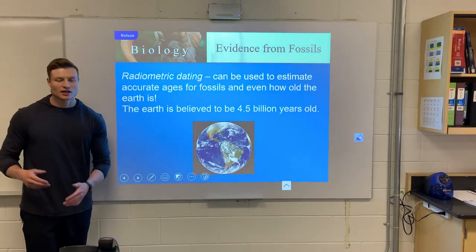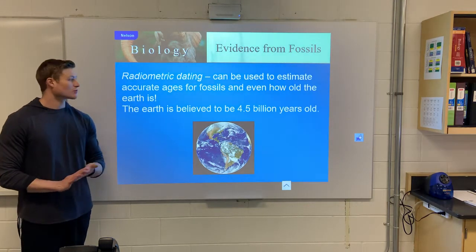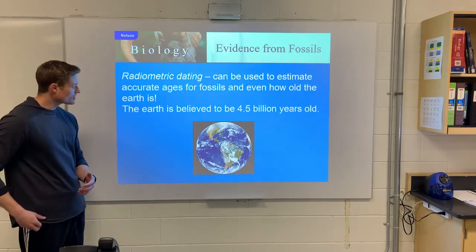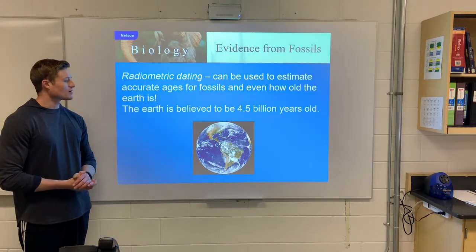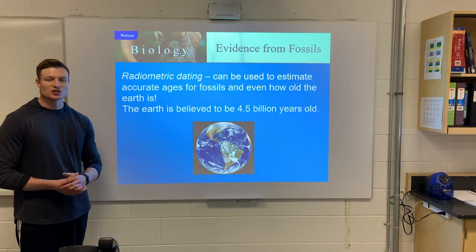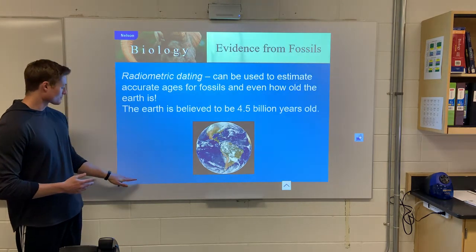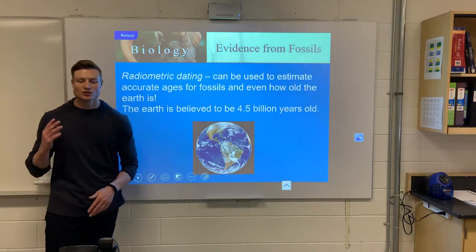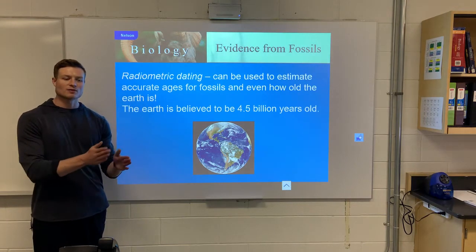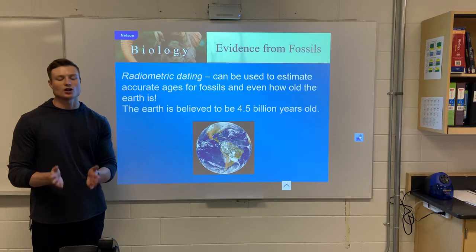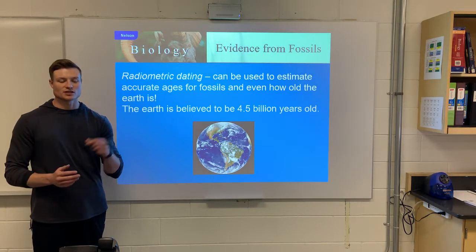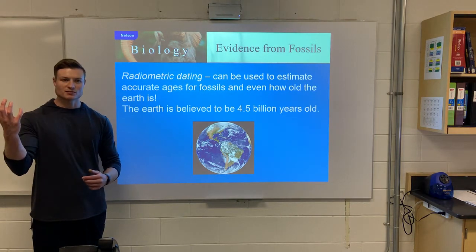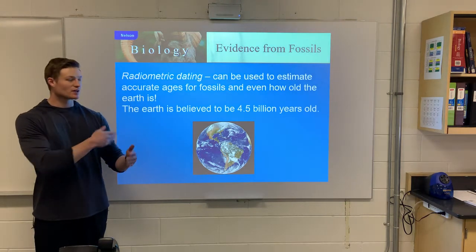We know the progression because we can do something called radiometric dating, or carbon dating, where we look at how old the fossils are. It is believed that Earth is about 4.5 billion years old, judging by the oldest known rocks found. We can actually look at a fossil and see how far the carbon has decayed — depending on which version of carbon it contains, we can determine which fossil is older, put them in order, and see that progression.